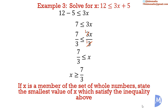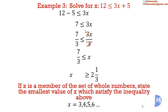The second part of this question: if x is a member of the set of whole numbers, state the smallest value of x which satisfies the inequality. x is greater than or equal to 7 over 3, which is the same as x is greater than or equal to 2 and one third. Thus, the set of whole numbers that satisfy the above inequality are 3, 4, 5, 6, and so on. The smallest value that satisfies the inequality is 3.